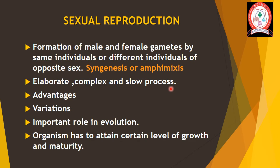Now we will see what are the advantages of sexual reproduction. First, genetic recombination in offspring causes variation. Second, it plays an important role in evolution. Sexual reproduction is exhibited by multicellular organisms, that is all flowering plants and most of the animals.